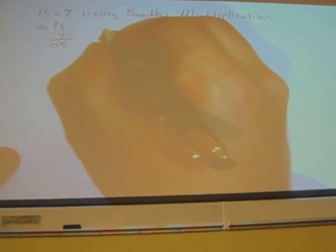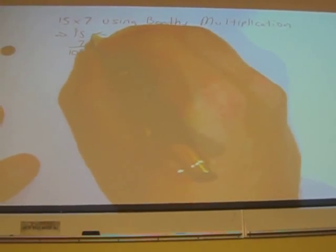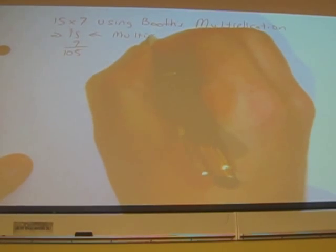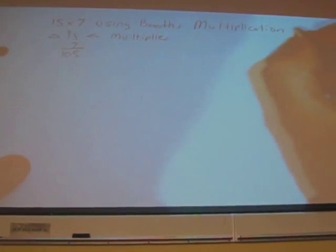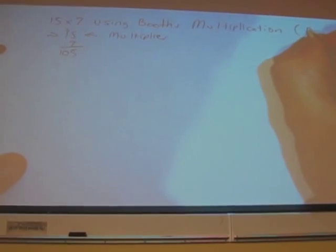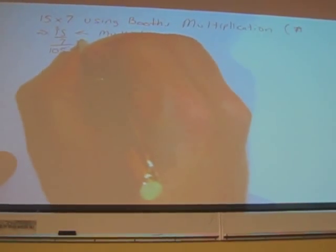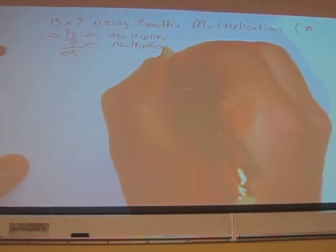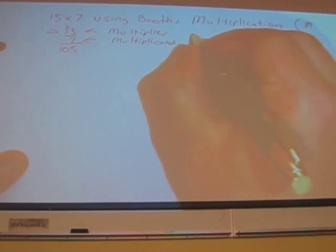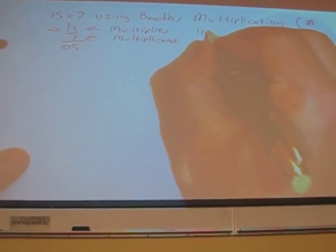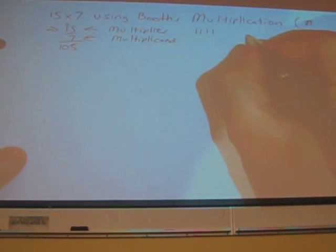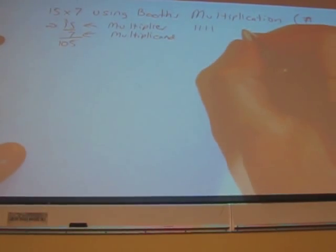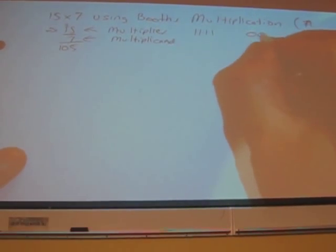The first thing we do is we establish our multiplier, which is the numerator. In any question like this, it'll be four bits. So, this is the multiplicand. And the multiplier is 1, 1, 1, 1. And 2's complement of the multiplicand is 0, 0, 0, 1.